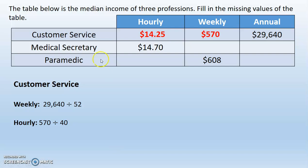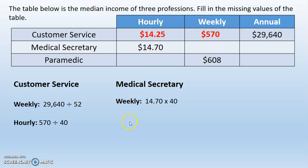Now let's work with the medical secretary. Going from hourly to weekly, we multiply by 40, and we get $588. Then going from weekly to the annual — which is one year — we multiply by 52, and we get $30,576.